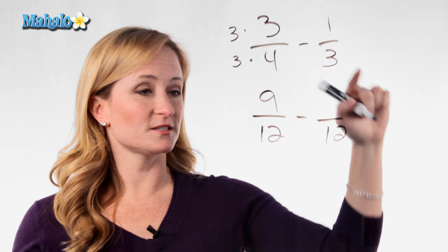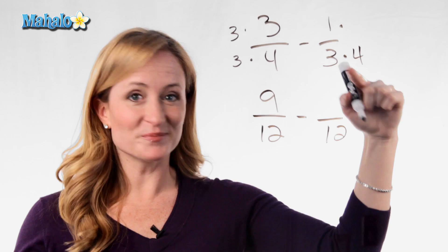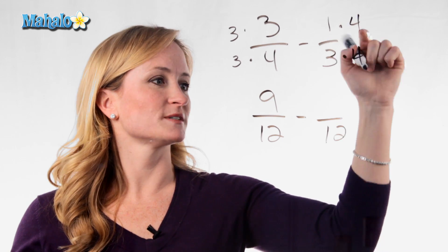How about this side? How did this 3 become a 12? We multiplied it by 4. And again, what you do to the bottom, you must do to the top. So 1 times 4 is 4.